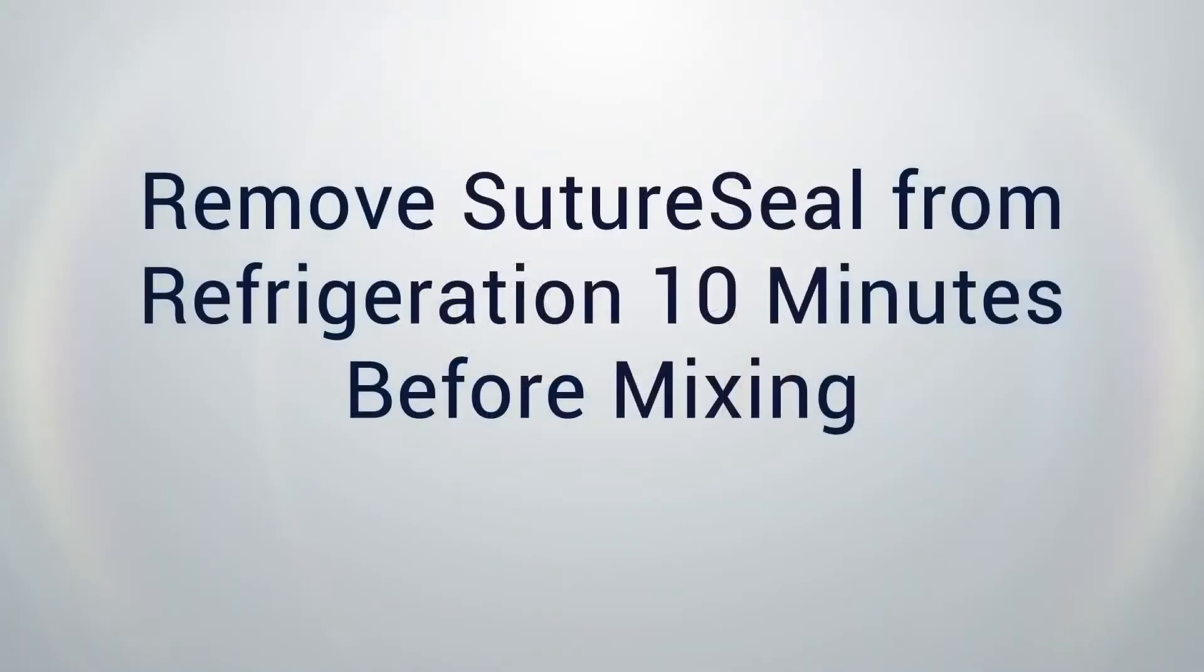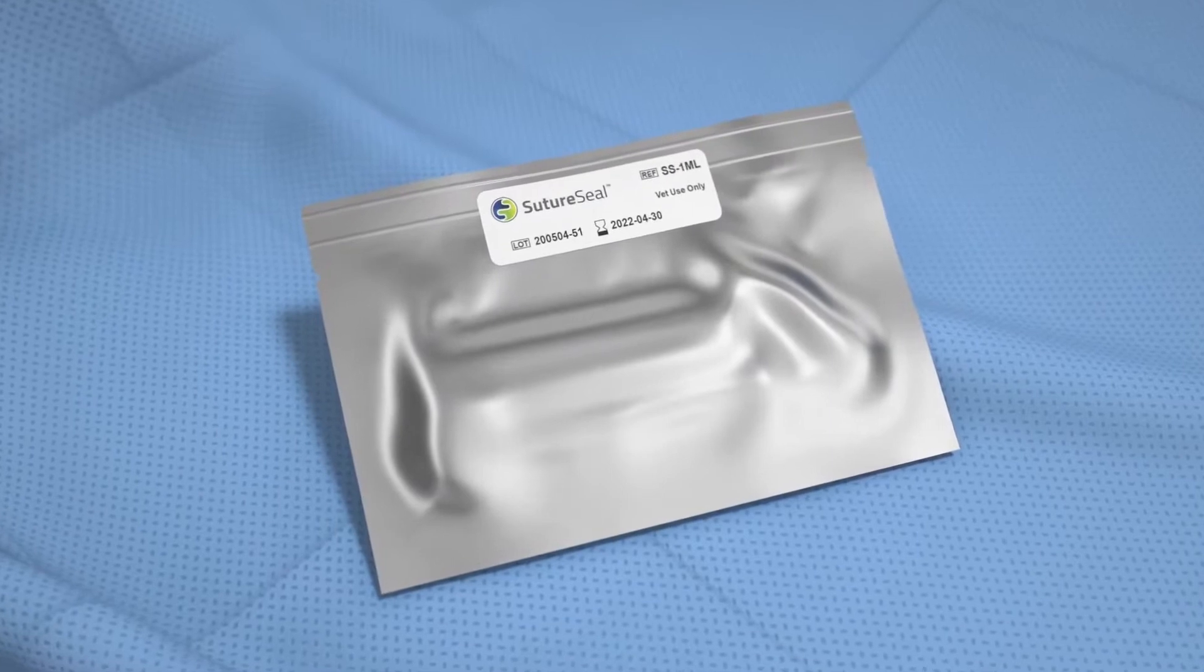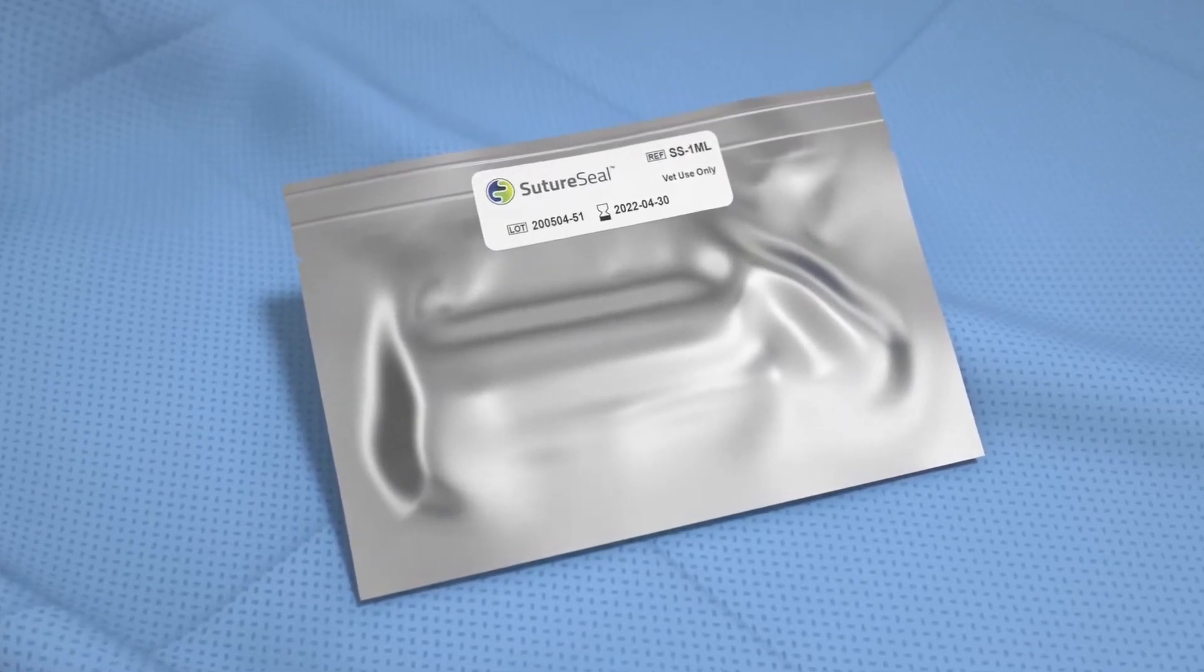Remove SutureSeal from refrigeration 10 minutes before mixing the contents for ideal product application. It is recommended that SutureSeal be applied at room temperature. These are the directions on how to properly mix and apply SutureSeal.